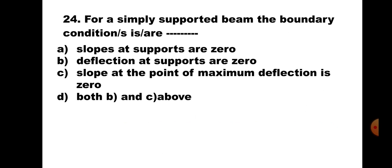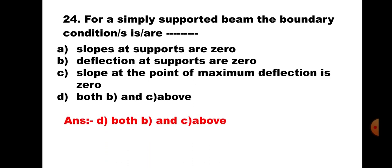Question number 24. For a simply supported beam, the boundary conditions are: A. Slopes at the supports are 0, B. Deflection at the supports are 0, C. Slope at the point of maximum deflection is 0, D. Both B and C above. For a simply supported beam, slope at the support is not 0 — so option A is incorrect. Deflection at the supports is 0 — correct. And where deflection is maximum, slope is 0 — also correct. Hence, the correct answer is D — both B and C.